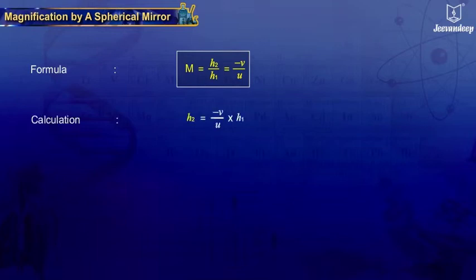Thus, H2 is equal to minus V upon U multiplied by H1. Or, 30 upon 7 divided by minus 10 multiplied by 2 is equal to 6 upon 7 cm.